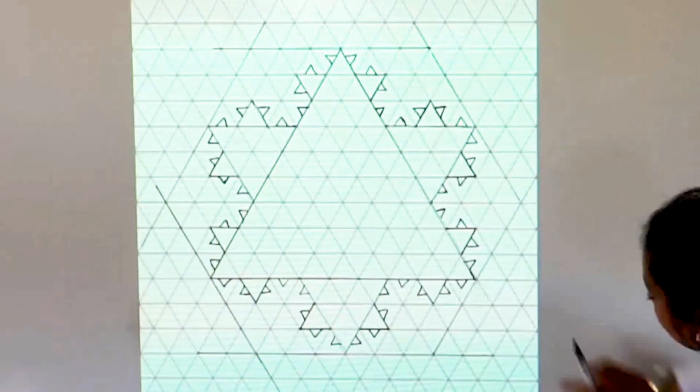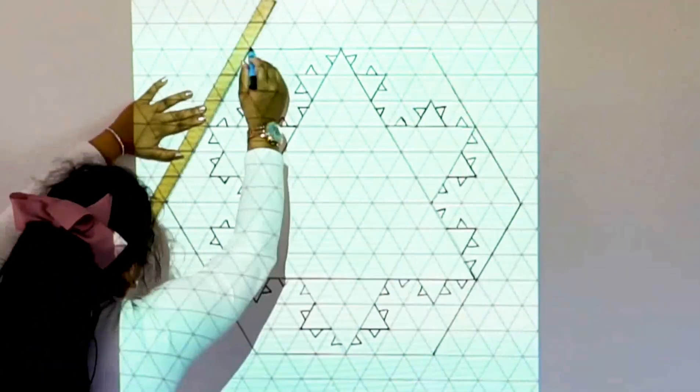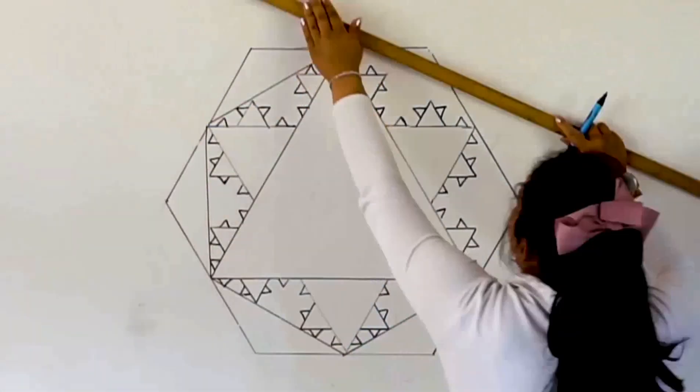Theoretically the perimeter is infinite because we can keep adding triangles forever but the area is finite because we can enclose it into a hexagon.